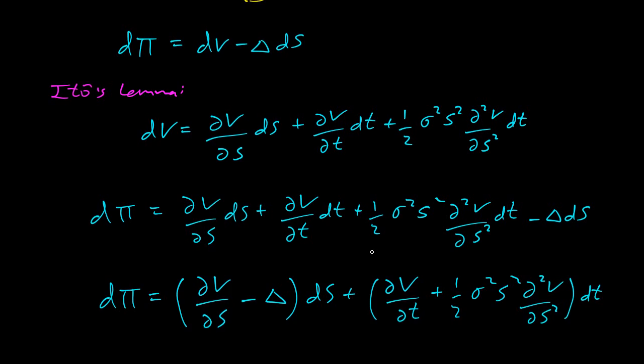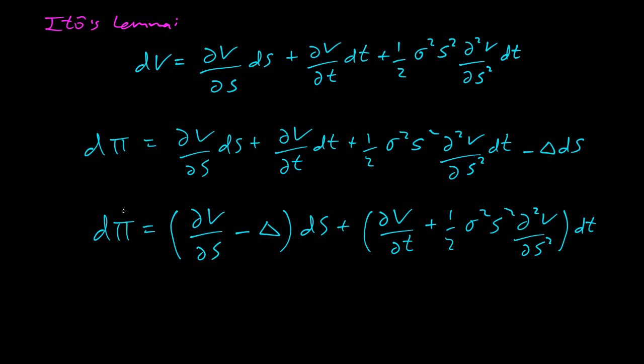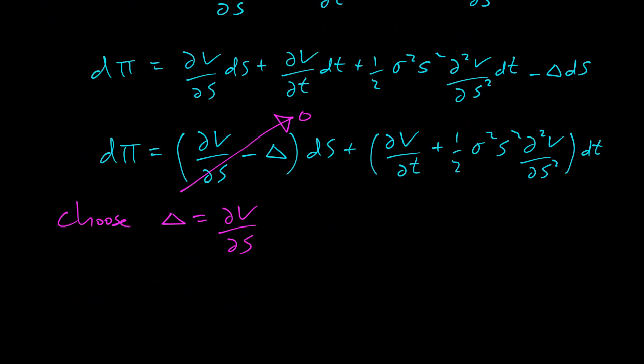Okay, so I just collected the terms. And now we choose Δ equals ∂V/∂S. And so this choice means that this will go to zero. And in fact, we just get dπ is ∂V/∂t plus half σ² S² ∂²V/∂S² dt.